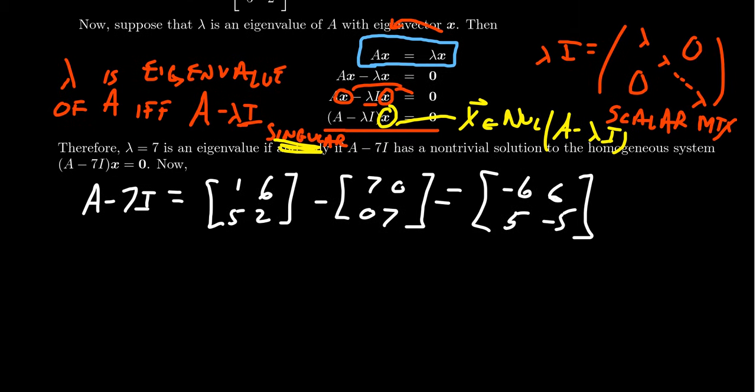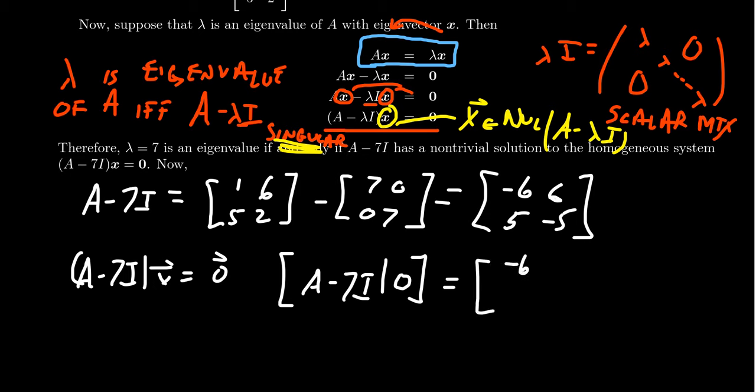And so now with this matrix in hand, we could try to solve the homogeneous system of equations. So we want to solve A minus 7I times x equals 0. And so we know that this comes down to solving the augmented system: A minus 7I augment 0. Now, of course, when you're augmenting 0, that doesn't really do much. We would take [-6, 6; 5, -5] augment [0; 0]. And if you exclude the last column, it's not such a big deal.